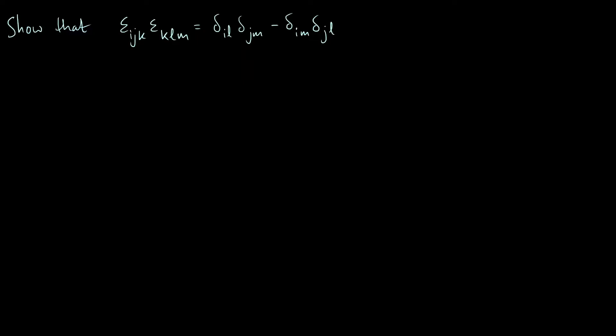Hi everyone, in this video we're going to derive another useful relationship between the epsilon Levi-Civita symbol and the Kronecker delta, and I'm going to assume some familiarity with suffix notation and the summation convention.